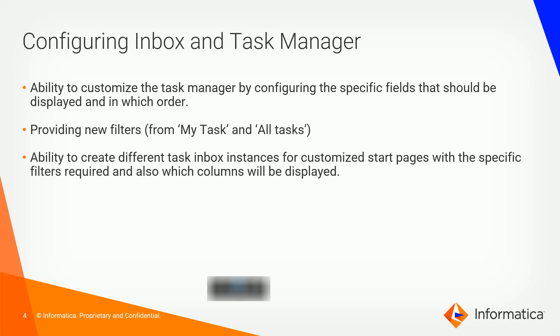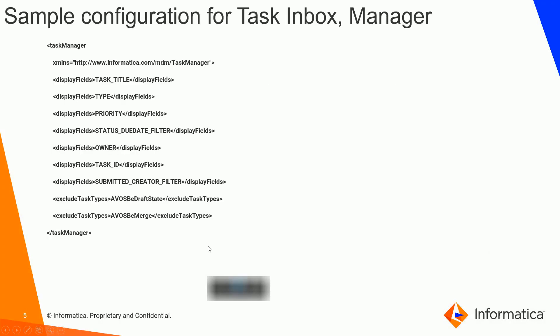When you go to the E360 application, you will not see closed tasks — you will see other filters like open tasks, claimed tasks, etc. Apart from basic configuration, there is advanced setup in 10.3 that supports XML-based configuration for task inbox and manager, where you specify the displayable fields you want to see. There is also an interesting configuration called 'exclude task type,' which removes a specific task type from your inbox or task manager.